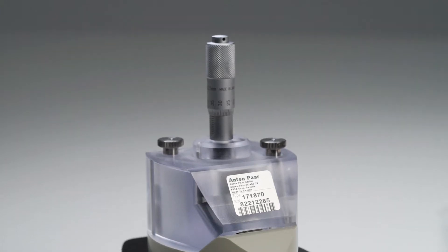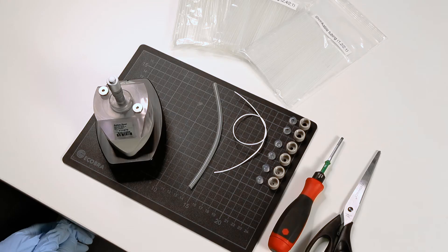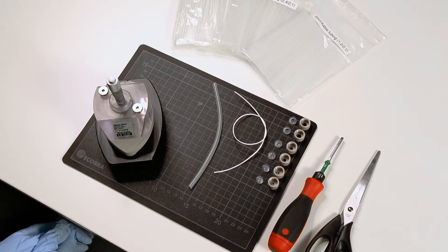This video is to show you how to mount your sample in the measuring cell for flexible tubings and how to mount the cell in Surpass III. We are going to mount a conventional silicone hose as a representative sample.